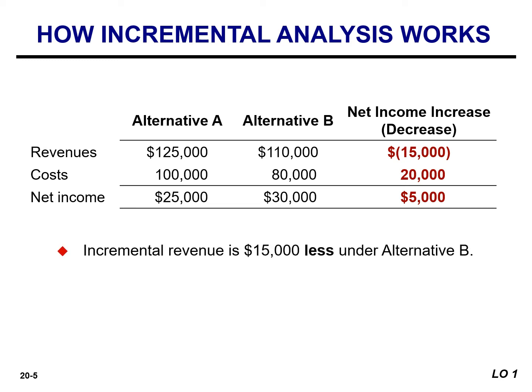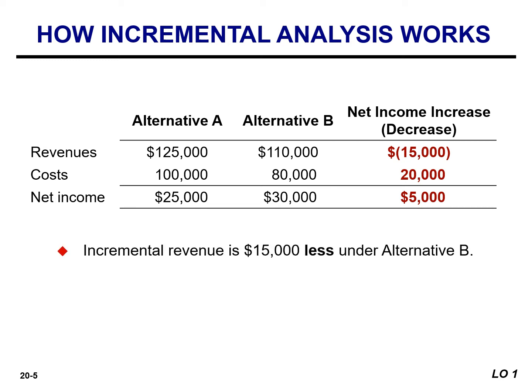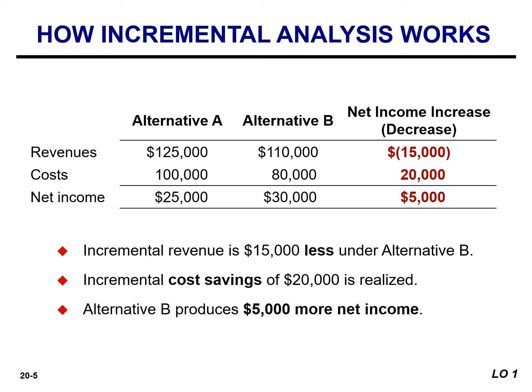In this case, incremental revenue will be $15,000 less under alternative B than alternative A. But a $20,000 incremental cost savings will be realized. Thus, alternative B will produce $5,000 more net income than alternative A.